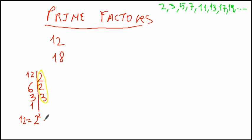So 12 is equal to 2 appearing twice, so 2 to the power of 2, multiplied by 3. We are going to do the same with 18.